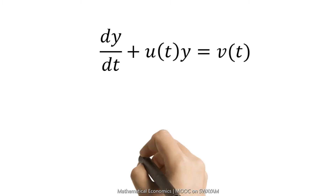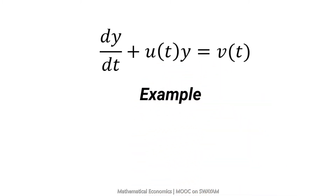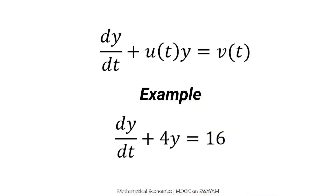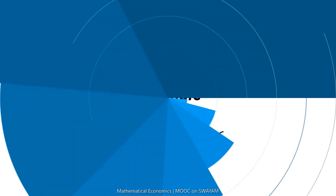For example, dy/dt plus 4y is equal to 16, where 4 and 16 are constants. It is a first-order differential equation with constant coefficient and constant term.